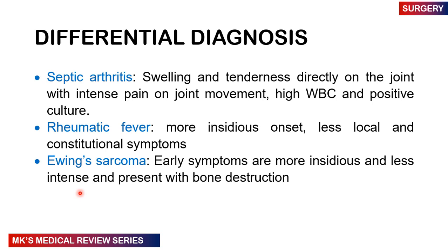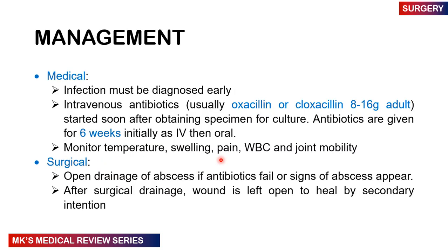What's our differential diagnosis? It could be septic arthritis — swelling and tenderness directly on the joints, with intense pain on joint movements, a high white blood cell count, and positive cultures. It could also be rheumatic fever — more insidious onset, less localized, with constitutional symptoms. You may also consider Ewing's sarcoma, a malignant bone tumor, where early symptoms are more insidious and less intense, presenting with bone destruction.